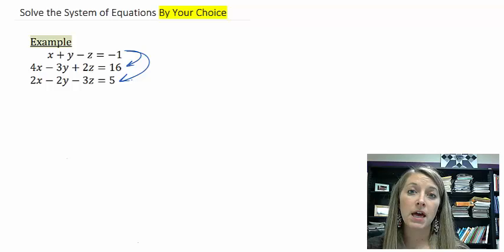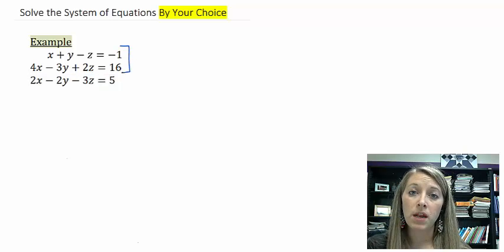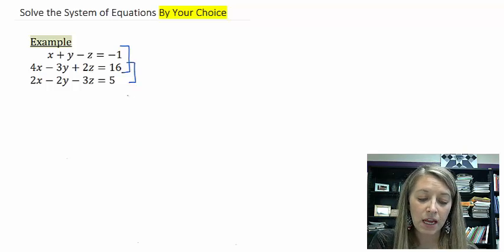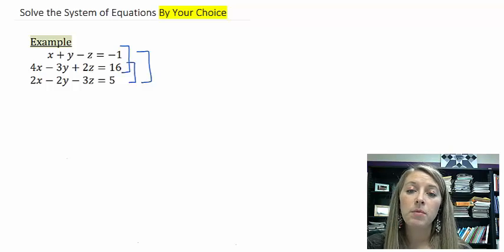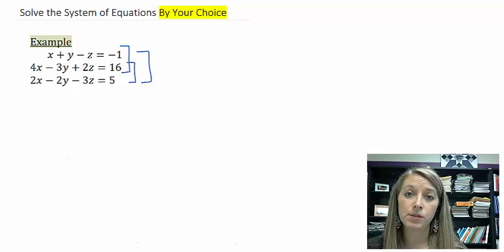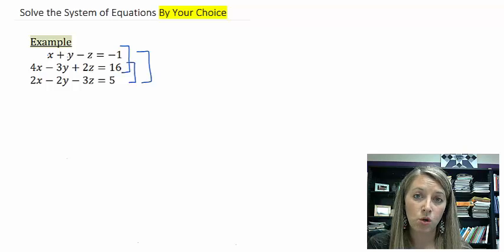If you wanted to do this by elimination, what you would need to do is you would need to pick two equations, eliminate one variable, pick two different equations. It doesn't matter whether it's the second and third or the first and third. And eliminate the exact same variable. And then again, you will have reduced it down to a two-by-two, two equations with two variables. It doesn't matter. Use the method that you prefer, whether it's substitution or whether it is elimination. I'm going to do elimination. Again, that's my preferred method, but I think substitution works equally as well on this problem because you have nice variables like x and y in the first equation to solve for.